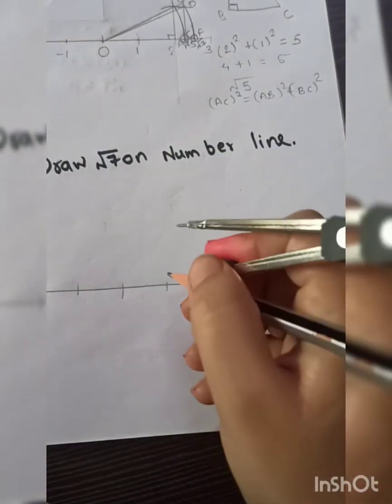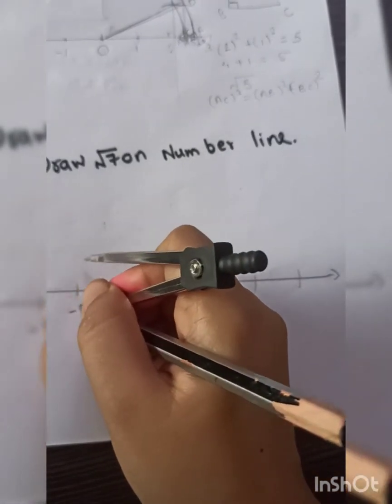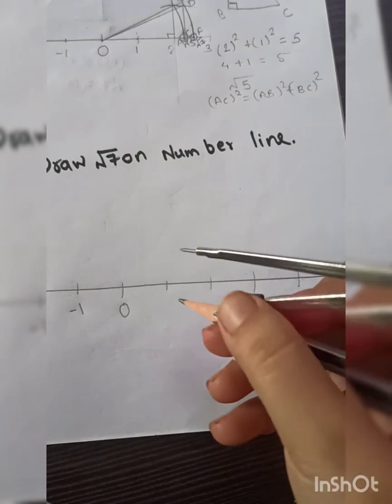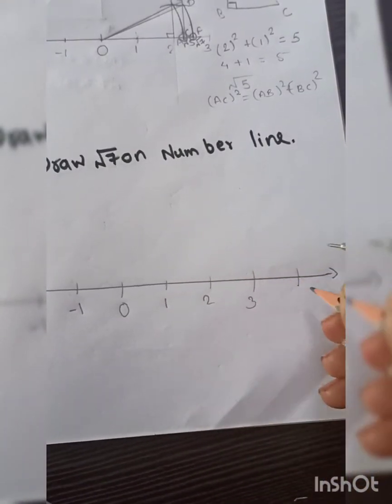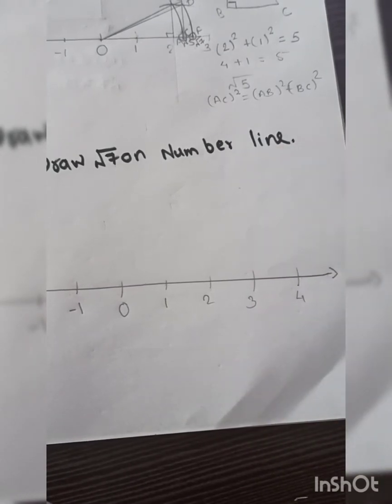Now I can write 0 anywhere. Since we are not interested in the negative numbers, I can start from here. To the right side we will have positive numbers, to the left side we will have negative numbers. So here are all the positive numbers: 1, 2, 3, 4. Now to draw root 5 on the number line.